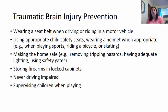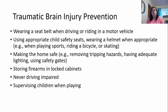How can we prevent some of these brain injuries? Wearing a seatbelt when driving or riding in a motor vehicle is one of the best ways. Using appropriate child safety seats installed correctly. Wearing a helmet when appropriate — for sports like football, bicycle riding, or skating. Making the home safe is really important for little kids and the elderly — removing tripping hazards, having adequate lighting, using safety gates around stairs. Storing firearms in a locked cabinet. Never driving impaired. Supervising children when they're playing to make sure injuries don't occur.